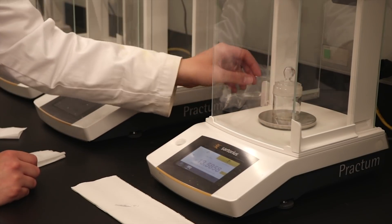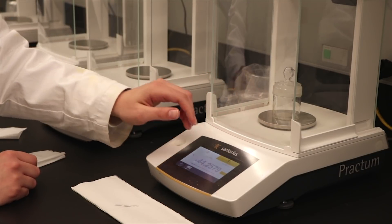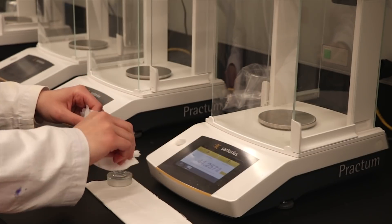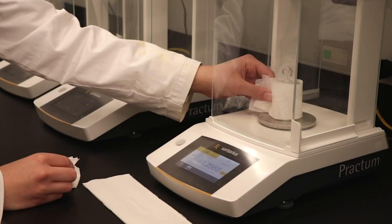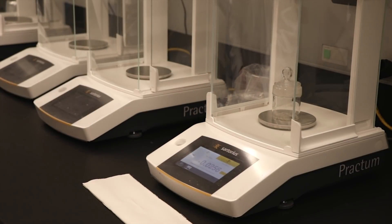Accurately weigh the ribbon using an analytical balance. Zero the balance with the weighing bottle. Then add the ribbon to the bottle and record the mass to four decimal places. Ensure that the doors of the balance are closed before each reading. Once the ribbon is weighed, do not touch it with your bare hands.